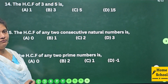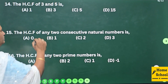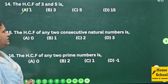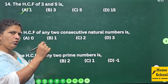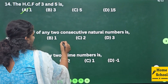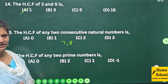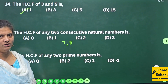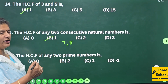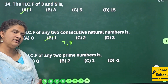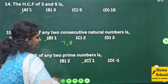Question 14: The HCF of 3 and 5 — since 3 and 5 are prime numbers, there is no common factor other than 1, so the answer is option A: 1. Question 15: The HCF of any two consecutive natural numbers — take 7 and 8; their HCF is only 1, so option B is 1. Question 16: The HCF of any two prime numbers — since there is no common factor other than 1, the HCF is 1, option C.